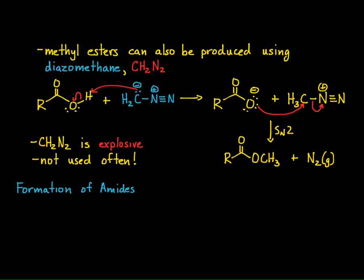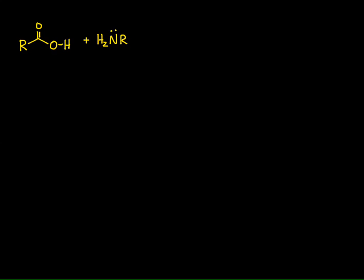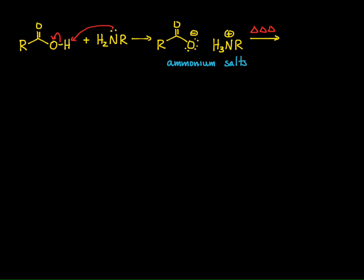A next reaction of carboxylic acids is the formation of amides. Forming amides directly from a carboxylic acid and an amine is not easy, because carboxylic acids are acids and amines are bases — the amine simply deprotonates the carboxylic acid to form a carboxylate plus an ammonium salt. If you heat those ammonium salts vigorously, you can sometimes dehydrate them to produce an amide, but this is rare because most of the time the salts decompose, making it a poor method.